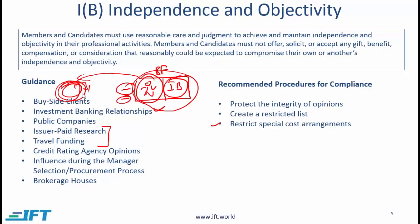The next item is extremely important: limit gifts, and this keeps coming up in exam questions. Note that this doesn't say all gifts are wrong or will impact independence and objectivity. We need to carefully determine which gifts might impact independence and objectivity and which might not. In all the examples discussed — where an external entity is trying to impact your independence — receiving gifts from that entity, such as a buy-side client or a public company trying to influence your research report, would clearly be problematic. However, token gifts such as a company sending a calendar are acceptable.